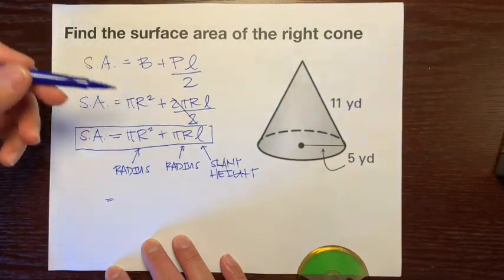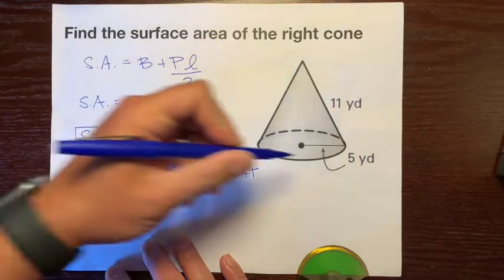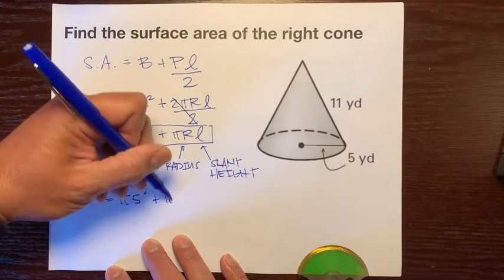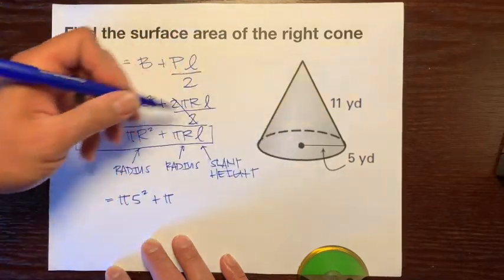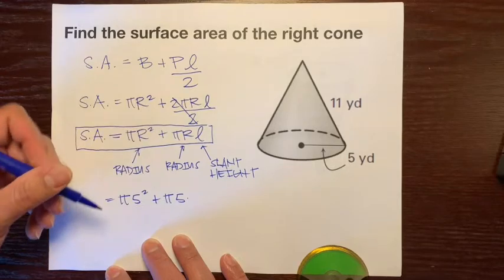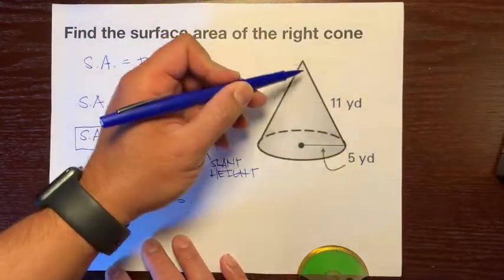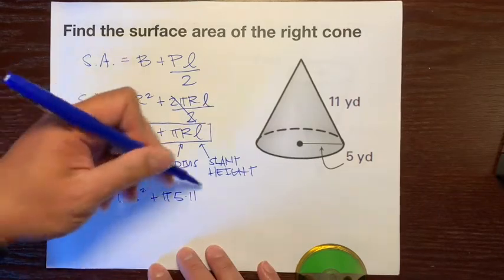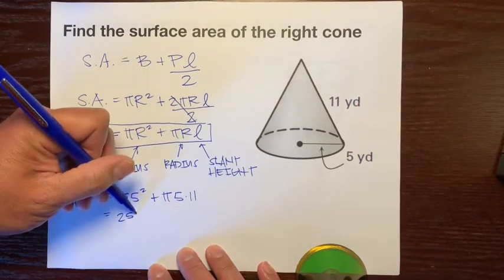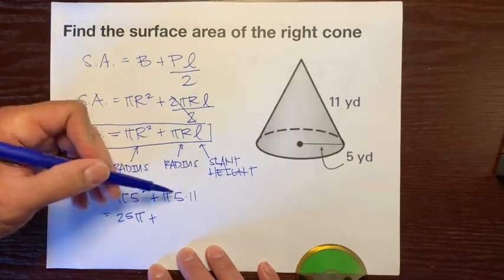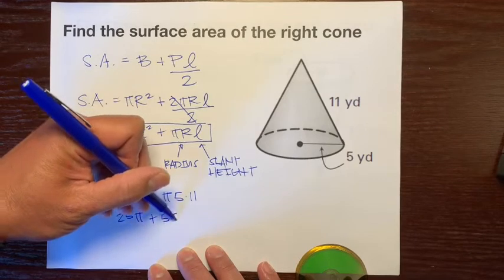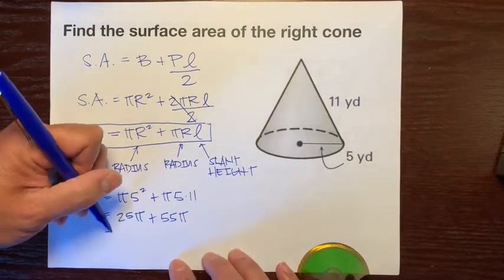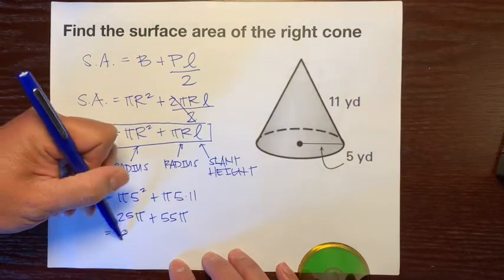Surface area of this cone is pi times 5 squared plus pi times the radius again, which is 5, times the slant height, the slanted one, not the one that goes straight up, which is 11. Now we work it all out. 5 squared is 25 pi plus 5 times 11 is 55 pi. Both of them have pi, so we can combine these like terms. 25 pi plus 55 pi makes 80 pi.